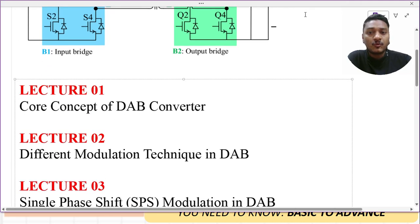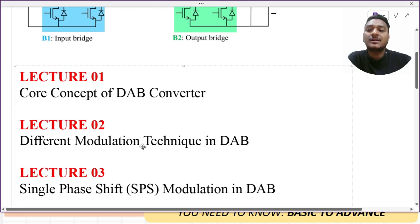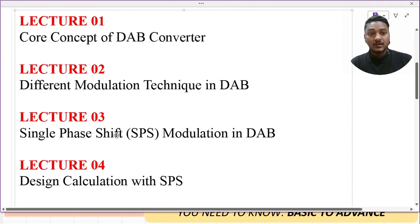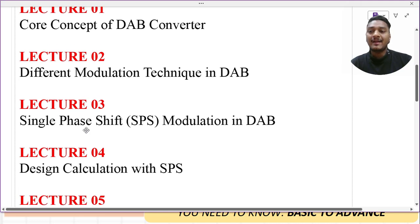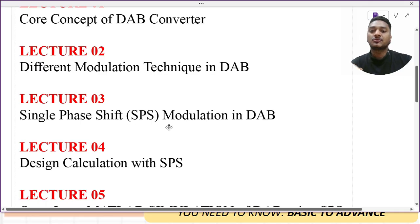Once we understand how power flows between the bridges, we'll look at different ways to implement that — the different modulation techniques in the DAB. We will first understand how these modulation techniques are developed, then study each one in detail. In lecture number three, we cover the well-known single phase shift modulation technique — deriving the operation, the power transfer equation, and the waveforms.